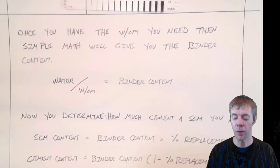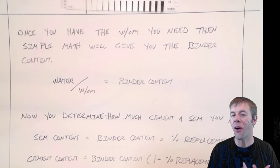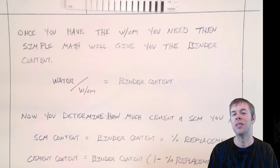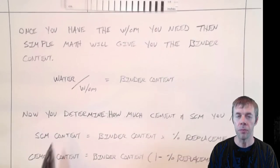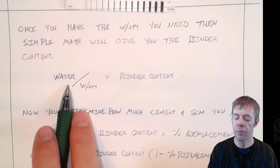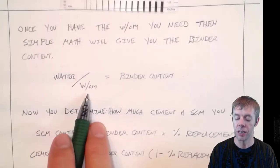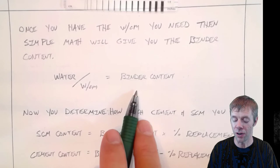Once you have your water cement ratio then all you need to do is some simple math to give you the right binder content. For example, take the water you need, you divide by the water to cement ratio, and you end up getting the binder content.